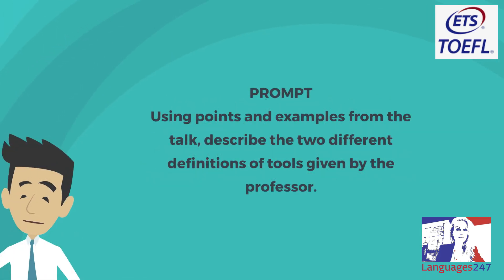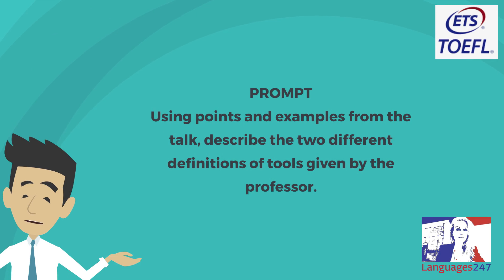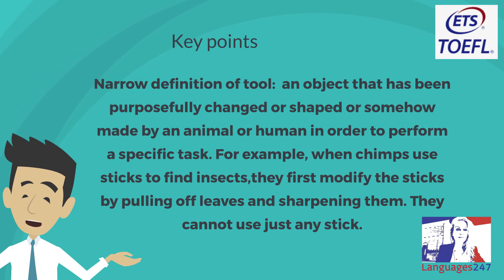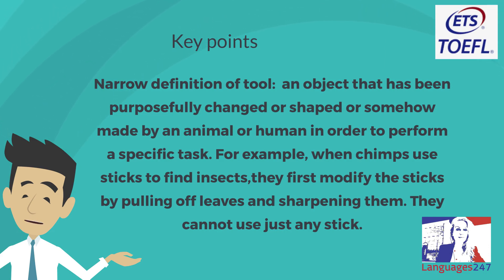Prompt: Using points and examples from the talk, describe the two different definitions of tools given by the professor. Key points — Narrow definition of tool: an object that has been purposefully changed or shaped, or somehow made by an animal or human, in order to perform a specific task. For example, when chimps use sticks to find insects, they first modify the sticks by pulling off leaves and sharpening them. They cannot use just any stick.